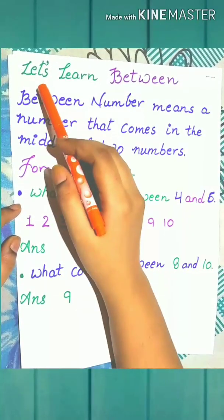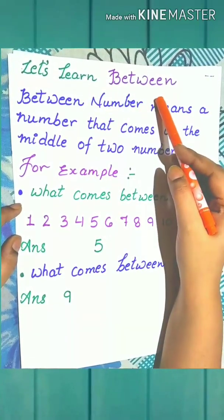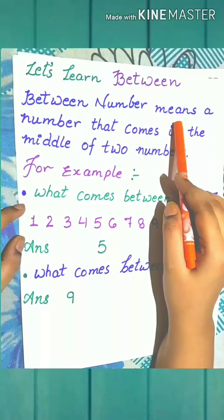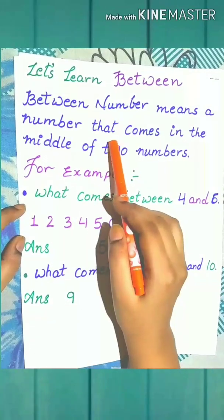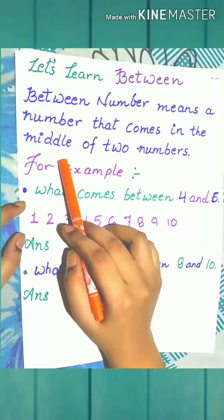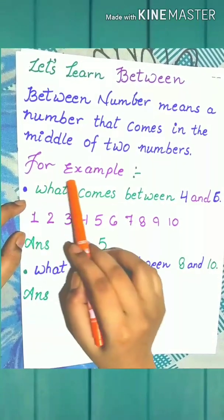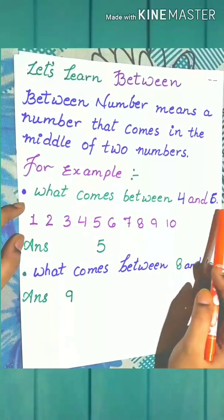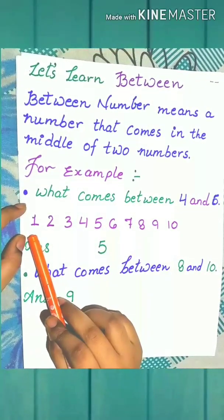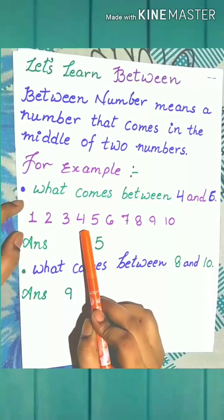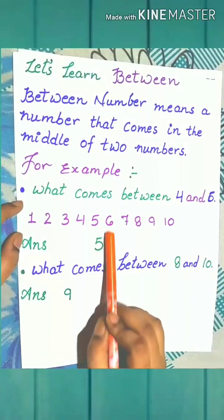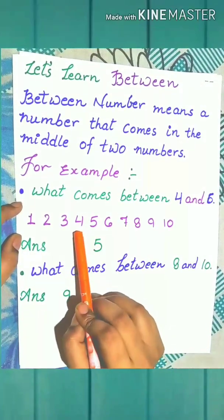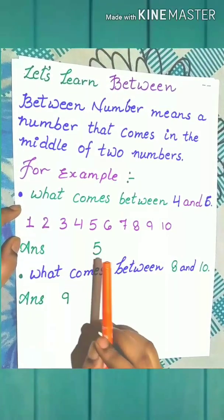Now let's learn between. Between number means a number that comes in the middle of 2 numbers. Let's understand with the help of an example. What comes between 4 and 6? Let's observe the number line. Between 4 and 6, 5 will come. So the answer is 5.